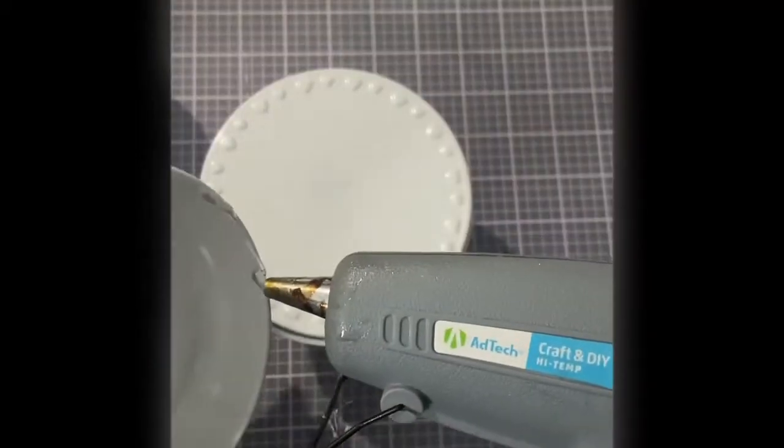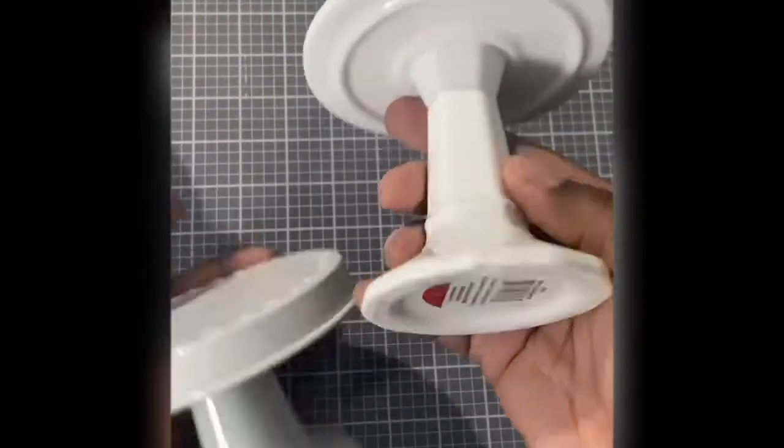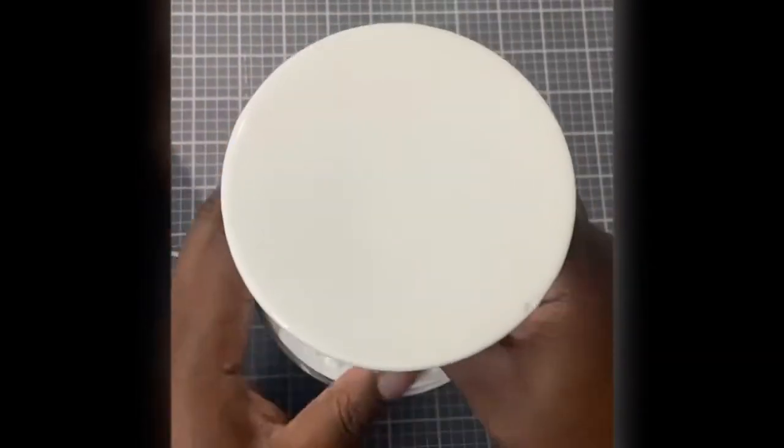What we're going to do is put hot glue around the bottom of all of our cake stand holders or candlestick holders. For this first one, we are going to use three of them. The second one we're going to use two.